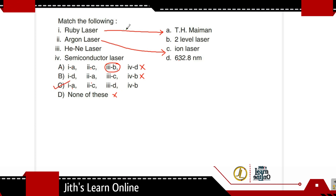The final matching is: Ruby laser — TH Maiman; Argon laser — Ion laser; Helium-Neon laser — lasing wavelength of 632.8 nm; Semiconductor laser — 2-level laser. With these matches identified, the answer is option C.